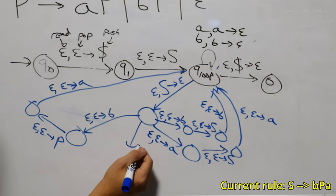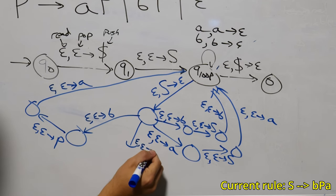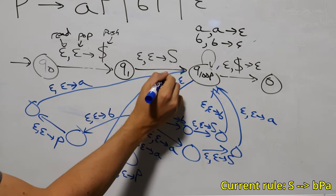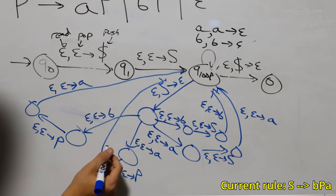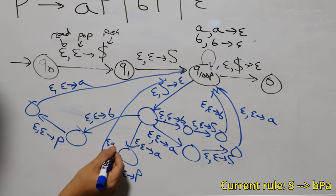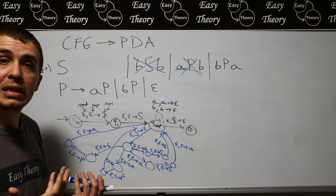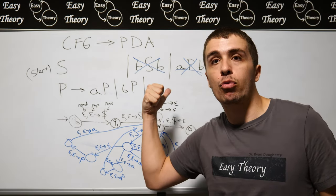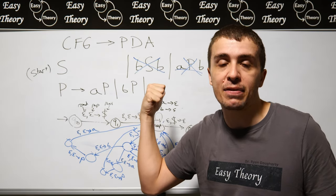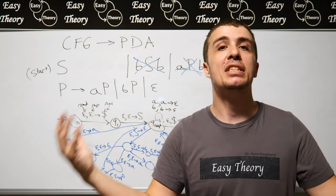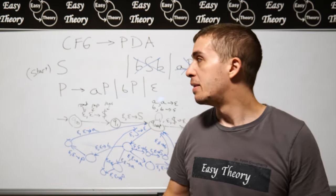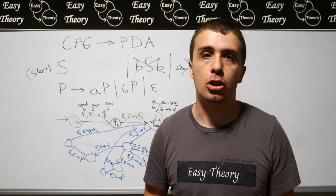One thing to notice is that everything we're doing here is completely algorithmic. I don't have to rely on special properties of this grammar other than: what are the variables, what is the set of terminals, what is the set of rules, and what's the start variable? I don't care what language it is at all — that's all the information I need. I don't need to know the structure otherwise.